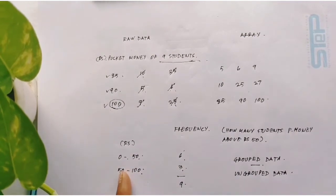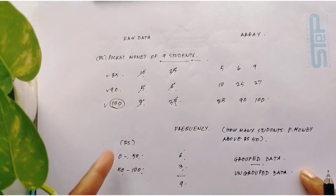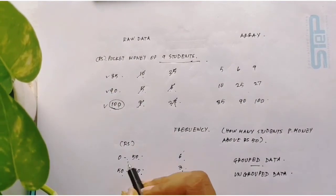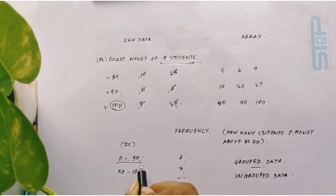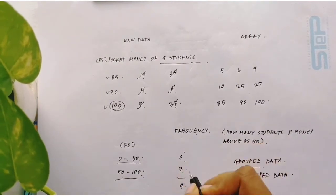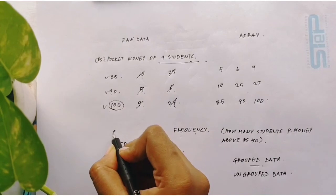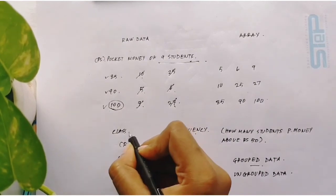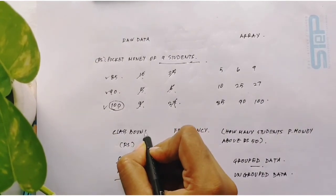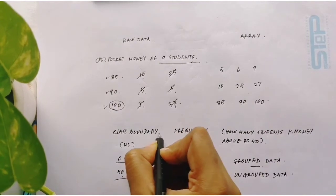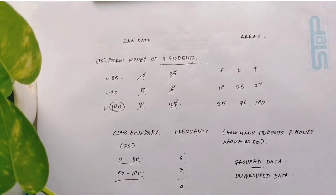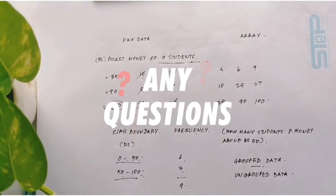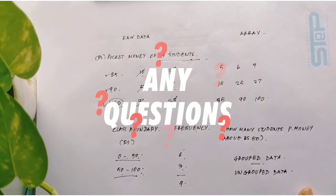So this is the difference between the two. Now here I forgot to tell you one thing - these groups, individual groups, like we call this frequency, we call this class boundary. I will come later about the details of how frequency distribution table is made, but first this is the basic concept that you should know.